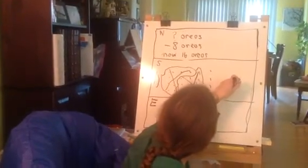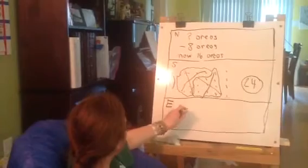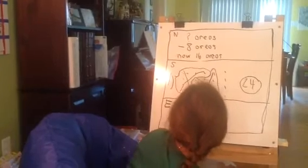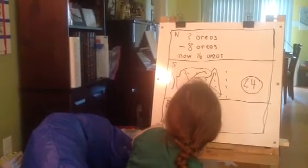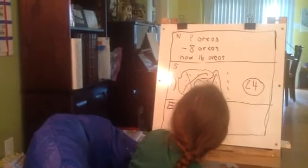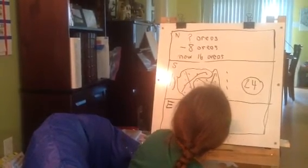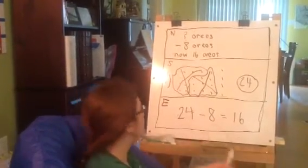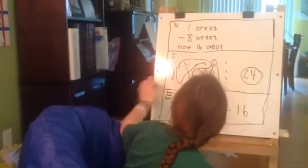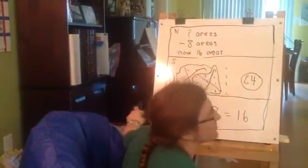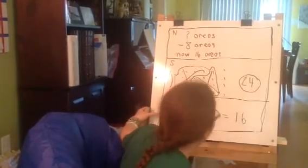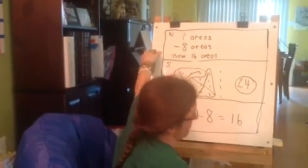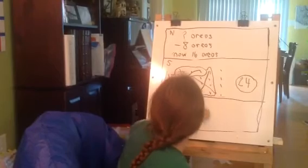Ms. Drass must have had 24 Oreos to start with. Let's see if this makes sense: 24 Oreos take away 8 Oreos equals 16 Oreos. Does that make sense? Yes, it does. So the answer is 24. If you got this right, you can have a bite of an Oreo — I meant to say points. You can get a point for each box you got right.